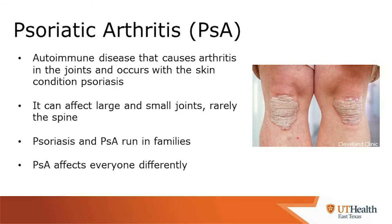Now we're going to talk about psoriatic arthritis. This is also an autoimmune disease that causes arthritis in the joints and causes a skin condition called psoriasis. It can affect large and small joints, but it rarely affects the spine. Psoriasis and psoriatic arthritis run in families, and psoriatic arthritis can affect patients very differently.